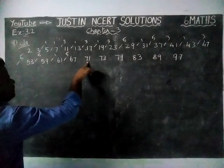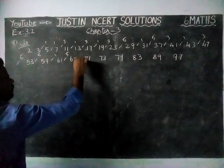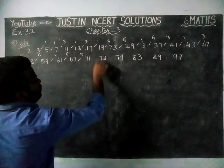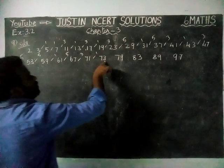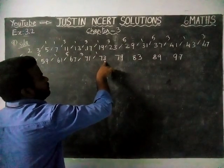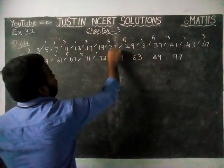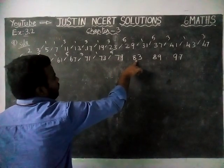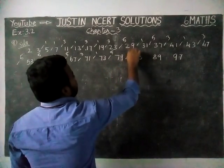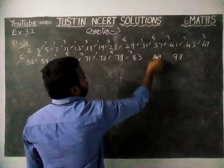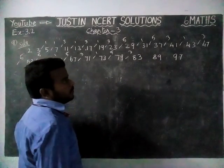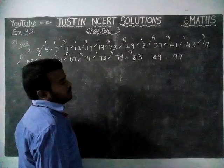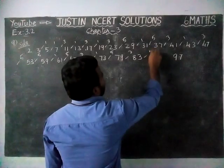67 to 71: 68, 69, 70 — 3 numbers. 71, here only one number. 74, 75, 76, 77, 78 — 5 numbers. 79 to 83: 80, 81, 82 — only 3 numbers. And from 83 to 89: 84, 85, 86, 87, 88 — only 5 numbers.